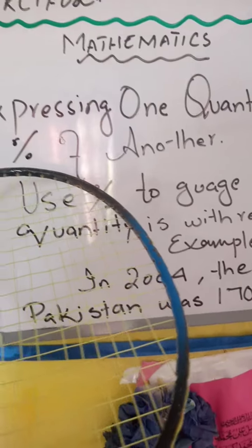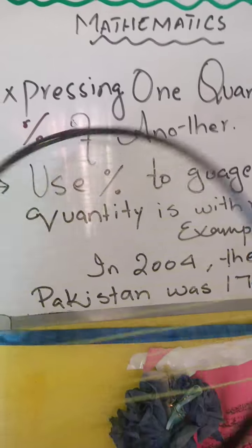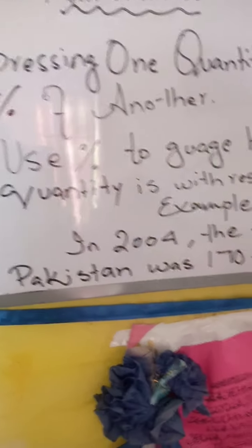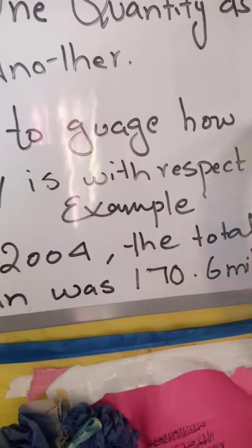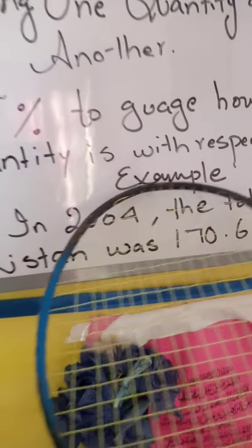We were discussing about percentages. So today we are comparing two quantities — expressing one quantity as a percentage of another quantity. For example, you can use percentage to gauge how large or small a quantity is with respect to another one.